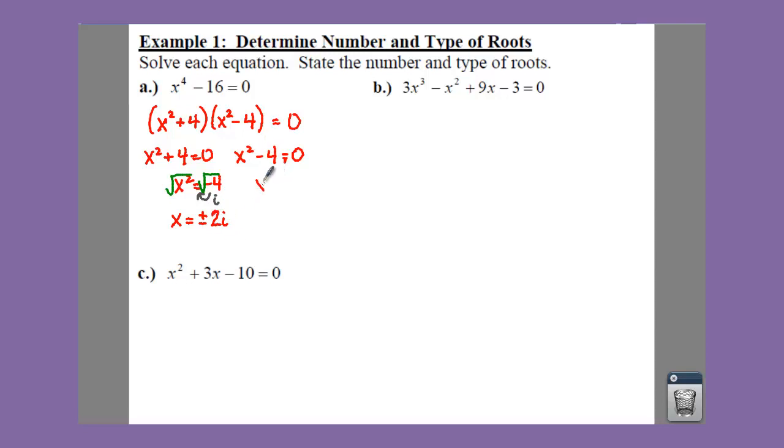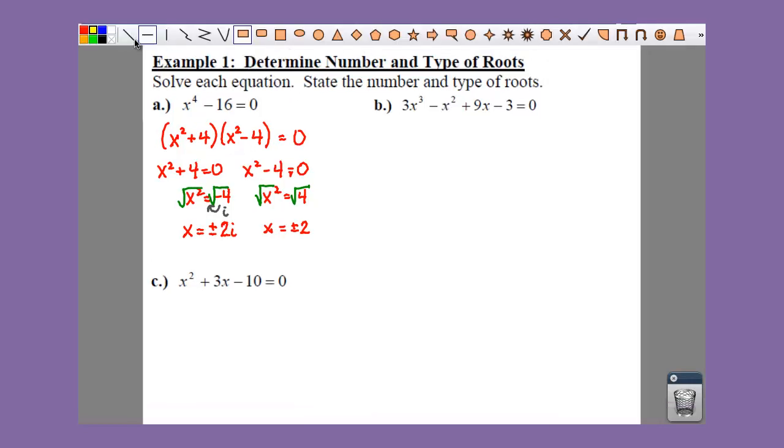Do the same thing for your x squared minus four. That gives you x squared equals four. And if we take the square roots here, notice we don't have a negative underneath the radical, so we're not going to have any i's. You know what you call a fish with no i? Fish! I know, that's crazy!